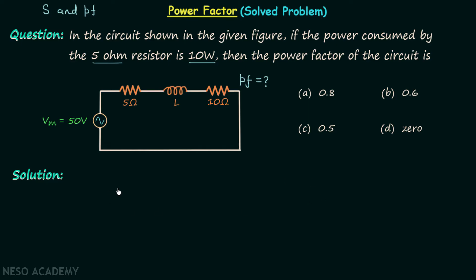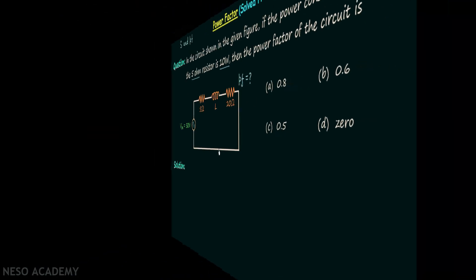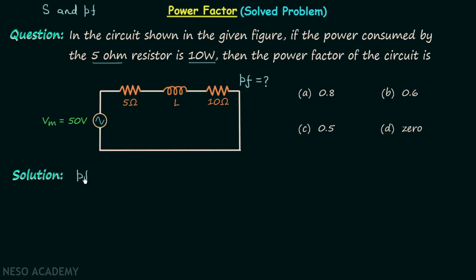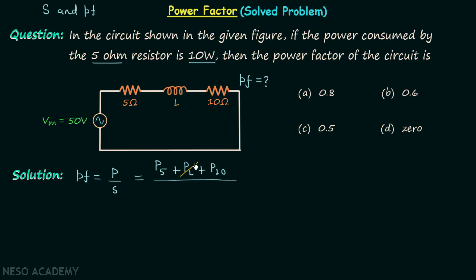We need to find the power factor of the circuit. Power factor is equal to the ratio of average power to the apparent power. The average power in this circuit will be equal to the power consumed by the 5 ohm resistor plus the power consumed by the inductor plus the power consumed by the 10 ohm resistor. The power consumed by the inductor is equal to zero, and it is given that the 5 ohm resistor is consuming 10 watts.